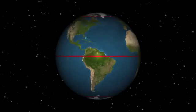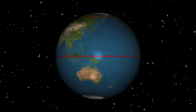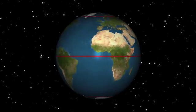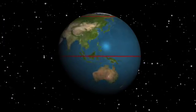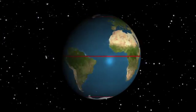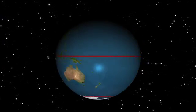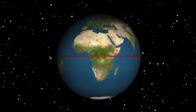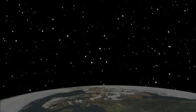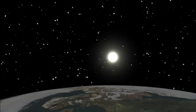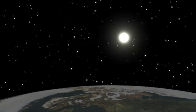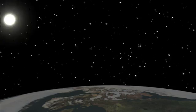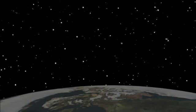At the equator, daytime and nighttime are equal to within a few minutes. But at distances north and south of the equator, the length of the day varies with the season, with the longest and shortest days being on the solstices. At the poles, once the Sun has risen, it stays up for six months before it sets again.